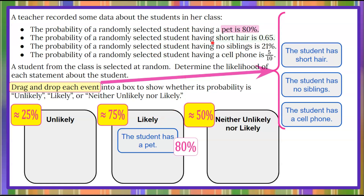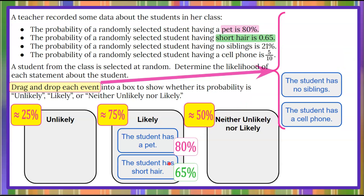Let's consider the next one: the probability of a randomly selected student having short hair is 65 hundredths. When we take 65 hundredths and change it from a decimal to a percent, that is going to be 65 percent. A student has short hair has a 65 percent chance of occurring in this class. 65 percent is closest to 75 percent, so we're going to move 'student has short hair' to a likely occurrence.